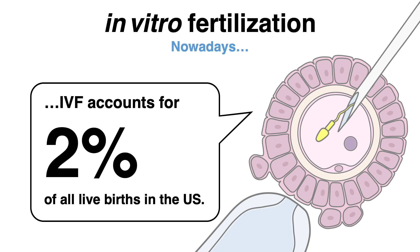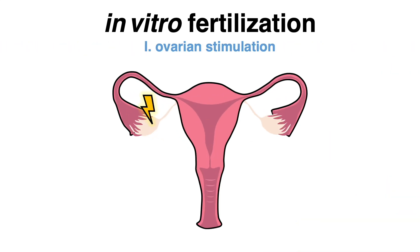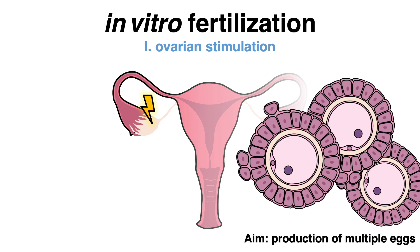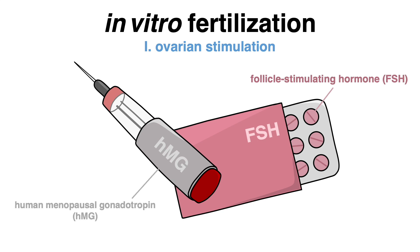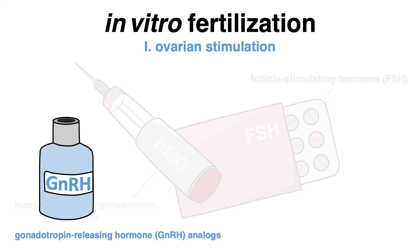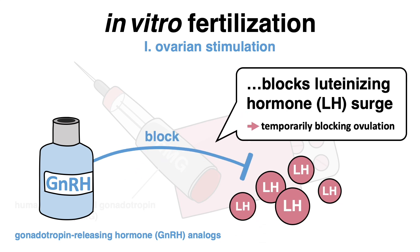Usually the process of IVF begins with ovarian stimulation. Multiple protocols have been developed, but they all have one aim in common: the stimulation of the ovaries to produce multiple eggs. Therefore, the woman takes medications such as follicle stimulating hormone or human menopausal gonadotropin, or in some cases even both. In addition, gonadotropin-releasing hormone analogues are given to block the physiological luteinizing hormone surge, thus temporarily blocking ovulation. This allows physicians to better time the oocyte retrieval.